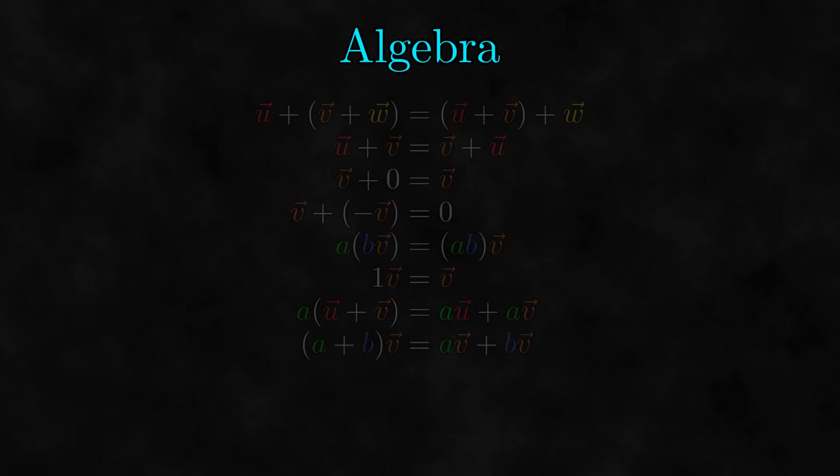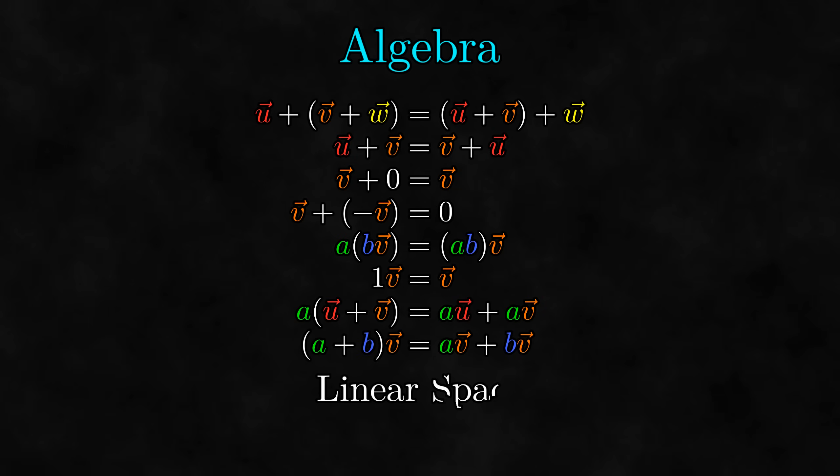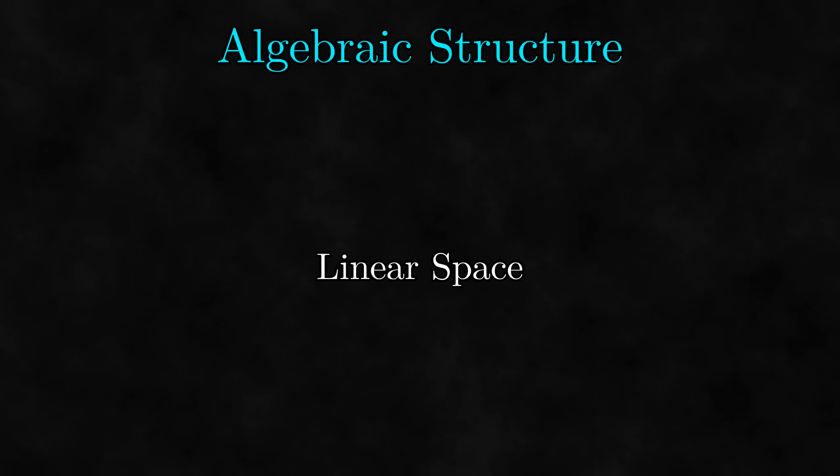One final thing that I need to bring up somewhere is the use of the word algebra. I said in chapter 1 that any set with operations that satisfies these conditions is called a linear space. In modern algebra, linear spaces are one example among many things that are called algebraic structures. Some other well-known algebraic structures are groups, rings, and fields. I'm not expecting you to know about these other algebraic structures, but it's good to know the context that linear spaces come from. Modern algebra is the study of algebraic structures like these.